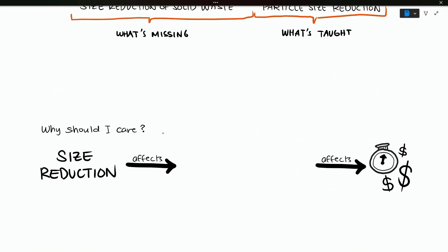Why should I care about size reduction anyways? What you do to the waste before it gets into digester influences the speed and the efficiency of your AD process. Size reduction can affect treatment time, what new feedstock you can take in, and your risk of upsetting your digester.